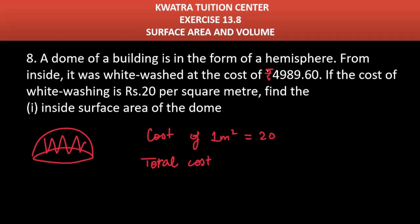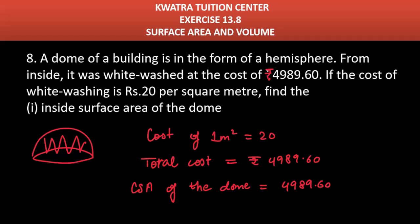When you have the total cost and the cost per square meter, you simply divide them. Total cost divided by cost per square meter: 4989.60 divided by 20 gives 249.48 square meters. This is the curved surface area (CSA) of the dome.